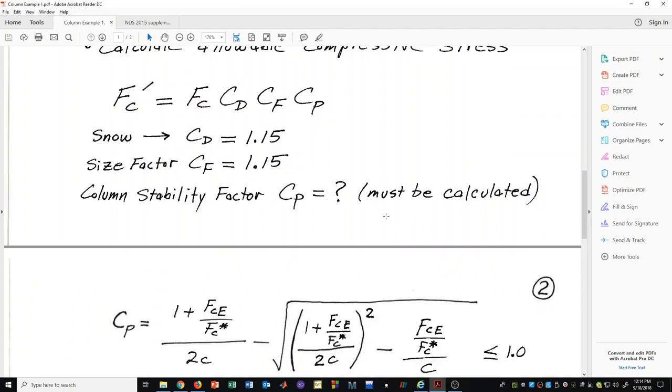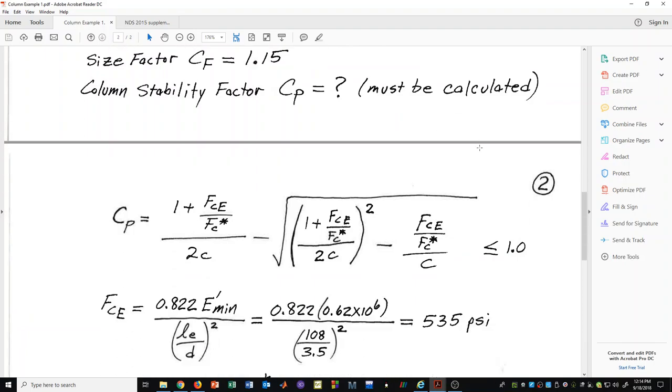Let's go and get the column stability factor. In the process we will get the table value for f sub c from the NDS supplement.